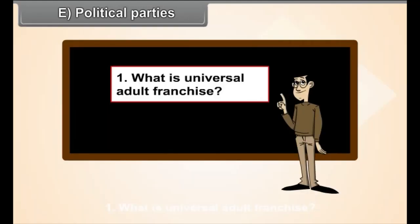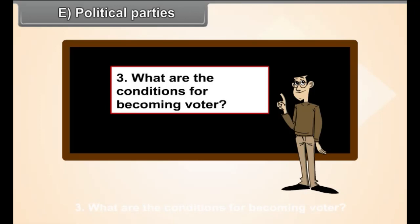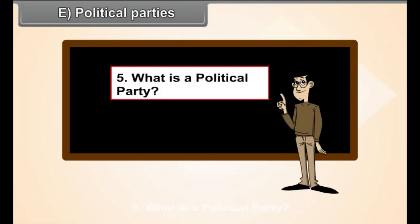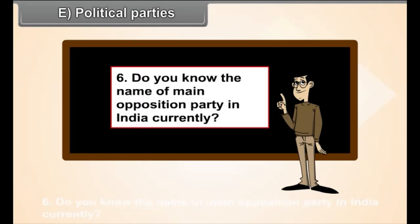Review questions: First, what is universal adult franchise? Second, what is constituency? Third, what are the conditions for becoming a voter? Fourth, what are the conditions for becoming a candidate? Fifth, what is a political party? Sixth, do you know the name of the main opposition party in India currently?